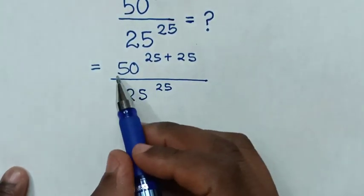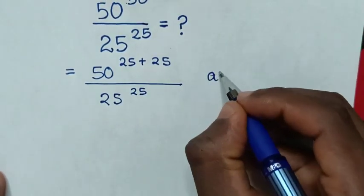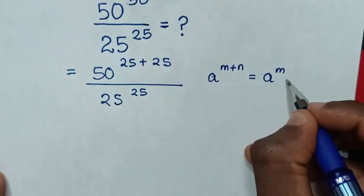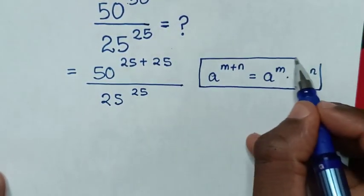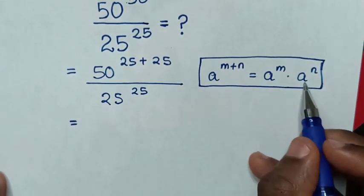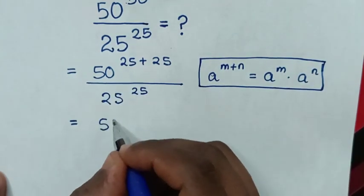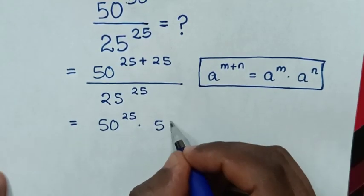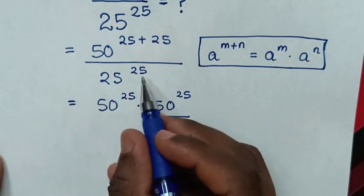Then in the next step, from 50 power of (25 plus 25), we apply the exponential rule that a power of (m plus n) is equal to a power of m times a power of n. So it will be 50 power of 25, times 50 power of 25, over 25 power of 25.